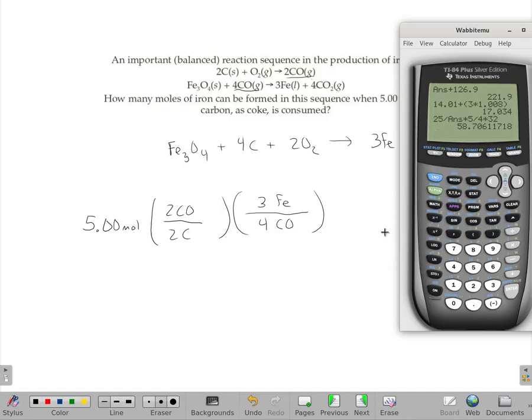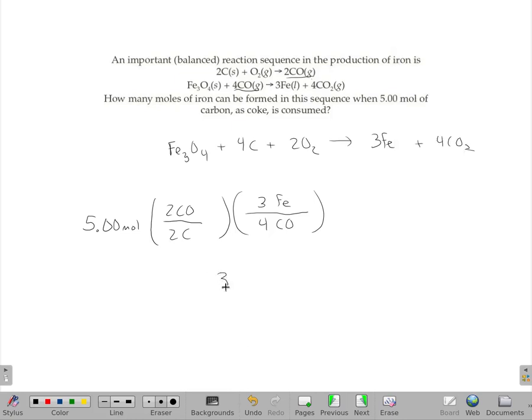In our calculator, we would do all this: five times two divided by two, don't really need to do that obviously, times three divided by four, the second fraction we'd have to. And we get an answer that this is going to make 3.75 moles of Fe.